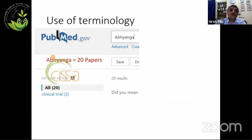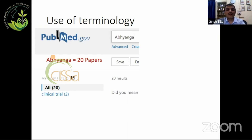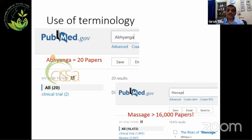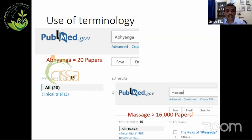Use of terminology is also important when we deal with modern sources of information. For example, if we search PubMed using the keyword 'Abhyanga,' we get only 20 papers. But if we search 'massage,' then we get more than 16,000 papers. That is the wealth of information we can really use to move ahead our own understanding.